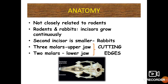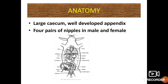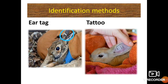Rabbits are not closely related to rodents and their resemblance is only superficial. Rodents and rabbits have incisors which grow continuously, but in rabbits the second incisor is smaller. Rabbits have 3 molars in the upper jaw and 2 molars in the lower jaw and therefore they have cutting edges, while in rodents they are modified for grinding. They have a large cecum and well-developed appendix. Four pairs of nipples are present in both male and female. There are 3 methods for identifying a rabbit: ear tag, tattoo and leg bands.